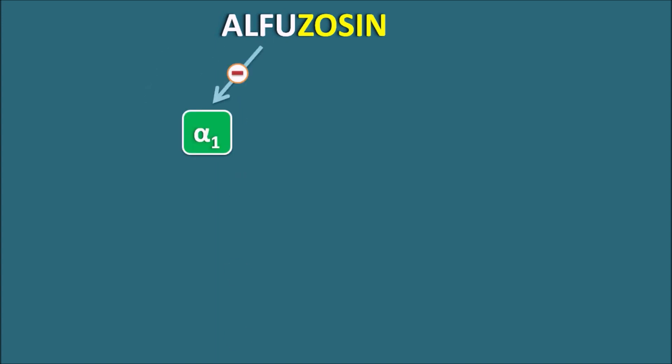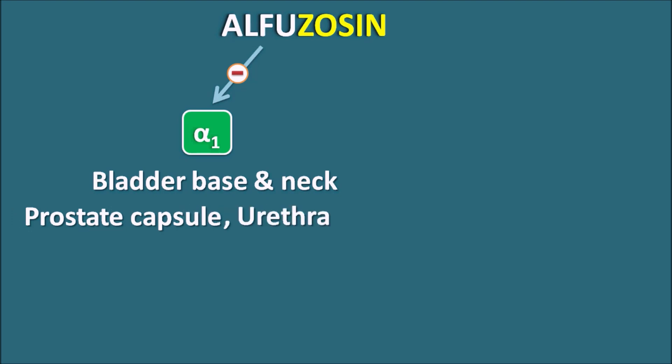Now let us see how Alfuzosin acts. This drug acts as an alpha-1 blocker, so it can block the alpha-1 receptors located at the bladder base, bladder neck, prostate capsule, and urethra. By blocking alpha-1 receptors at these target organs, Alfuzosin produces bladder relaxation, which increases urinary flow. In BPH, urinary flow is reduced due to bladder constriction and prostate enlargement; Alfuzosin produces relaxation and thereby increases urinary flow.